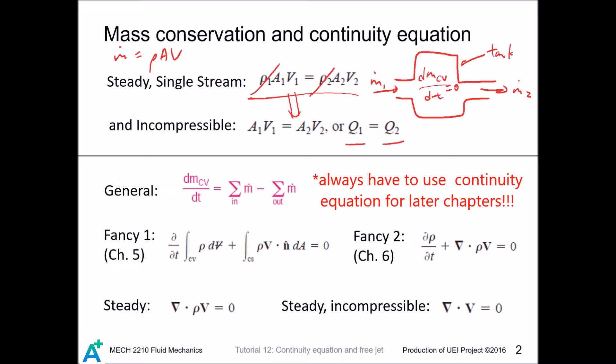For incompressible case, the densities are equal so we have ingoing volume flow rate equals outgoing volume flow rate. But in general, for a tank with multiple inlets and multiple outlets, its rate of mass increase equals mass flow rate in minus mass flow rate out. This general form of mass conservation is the continuity equation.